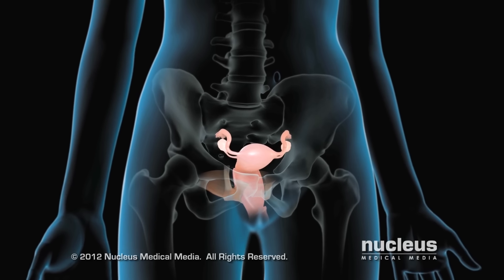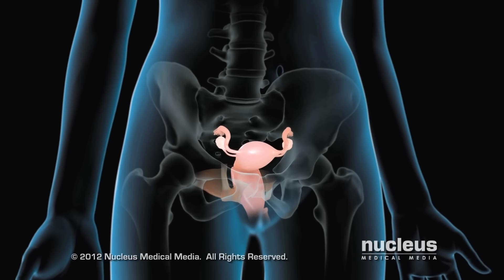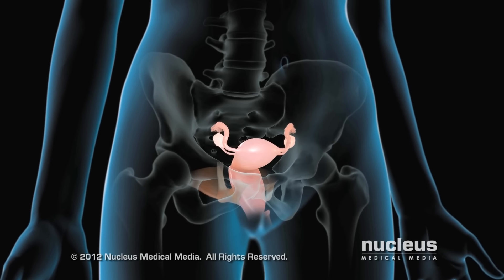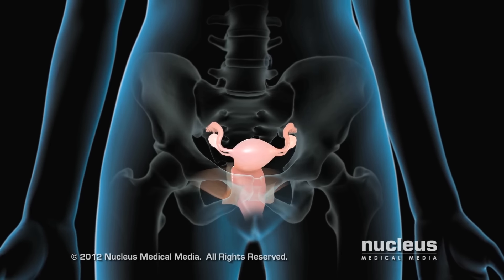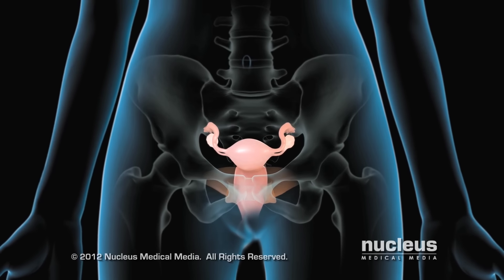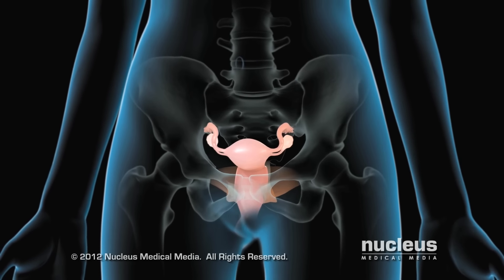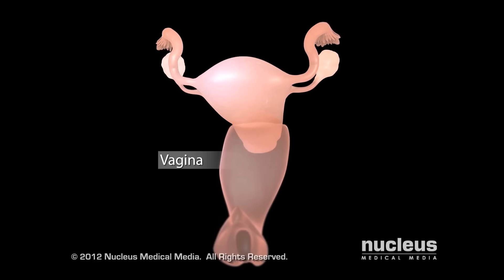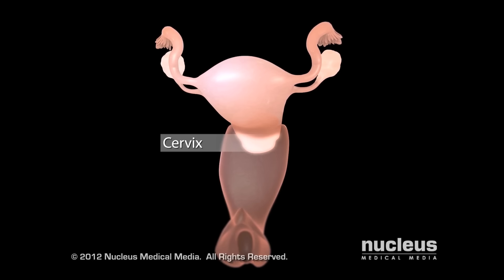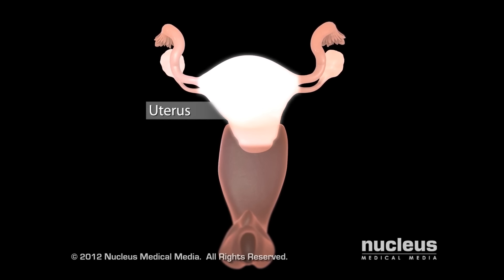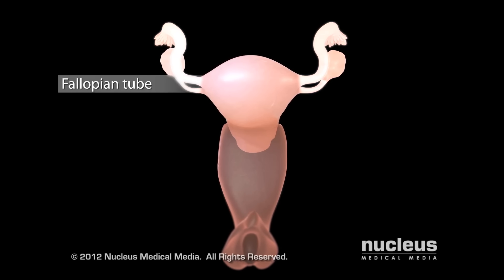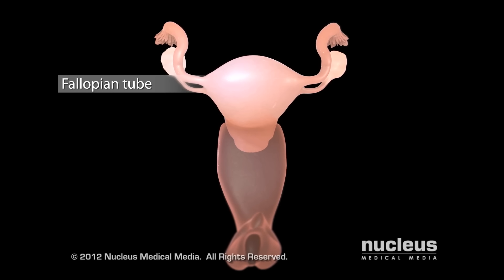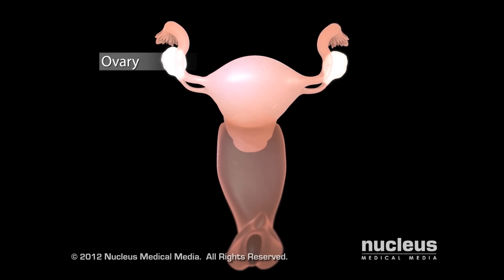If you are a female and have certain problems with your reproductive organs, your doctor may recommend a robotic hysterectomy to remove your uterus. Your reproductive organs include your vagina, cervix, uterus, fallopian tubes, and ovaries.